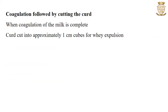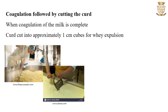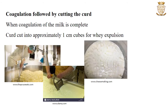The next step is coagulation followed by cutting the curd. After 30 to 45 minutes of rennet and culture addition, coagulation of milk will be complete and the process of whey expulsion from the curd can begin. The curd is a coagulated solid part formed after coagulation, and it will be cut into approximately 1 cm cubes for whey expulsion.